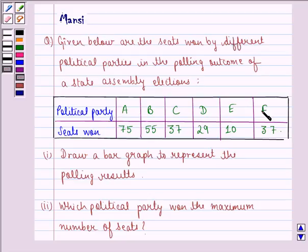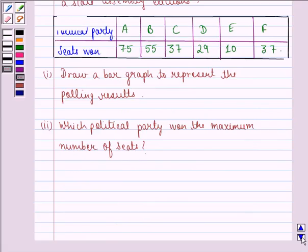Now these are the political parties and these are the seats won by them. We have to draw a bar graph to represent the polling results and then tell which political party won the maximum number of seats. So first of all we will see the solution to the first part.